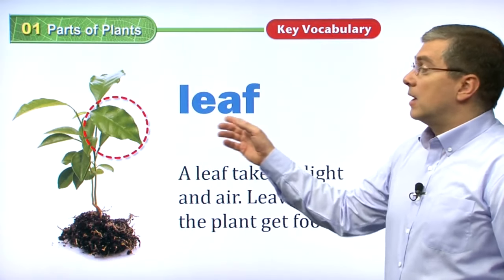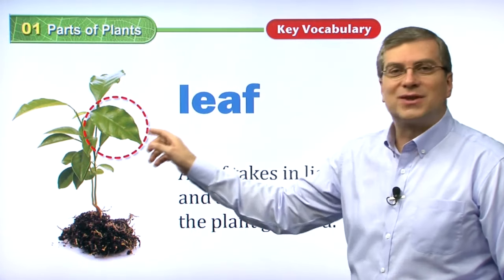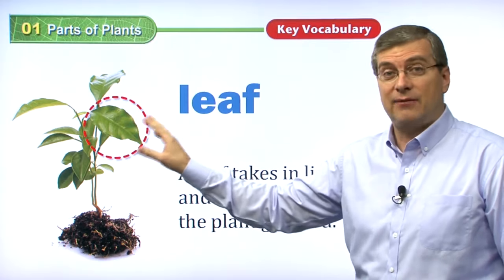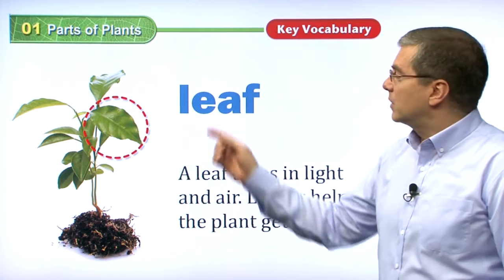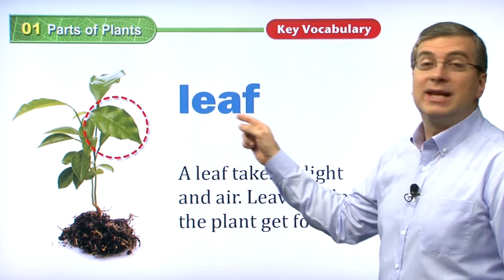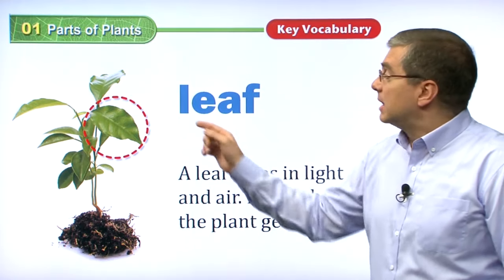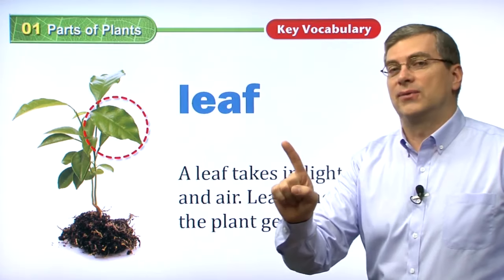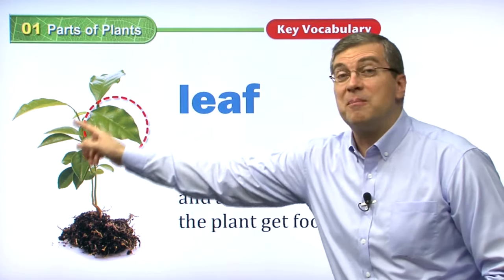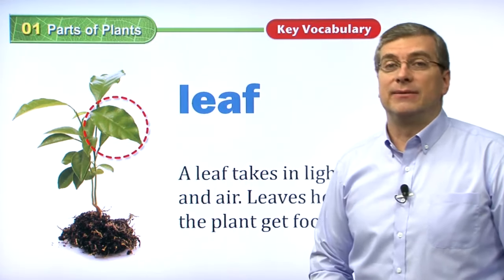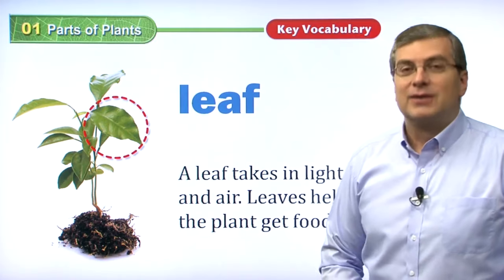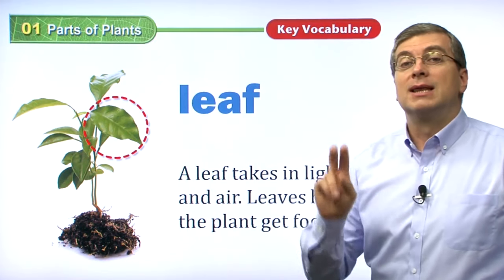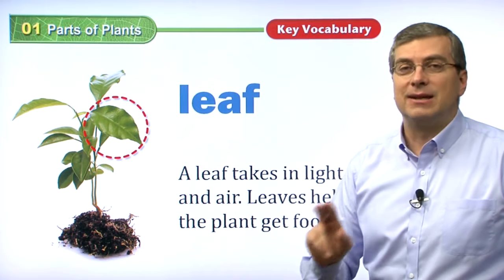Here we have a leaf. These are the top parts of the plant — you see these big green things. Most plants have these. Now, be careful: leaf is singular, meaning one leaf. But of course plants have many — many leaves. So if we talk about singular, it's leaf; or plural, leaves.